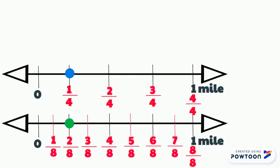Hopefully your work looks something like this. After you created, partitioned, and labeled your number lines, the points one-fourth and two-eighths line up perfectly with one another. This means two-eighths is equivalent to one-fourth.